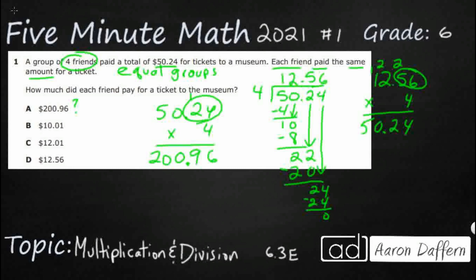$200.96, and then my original one of $12.56. Now, we can use a little bit of logic to eliminate this.